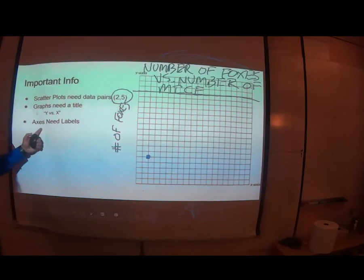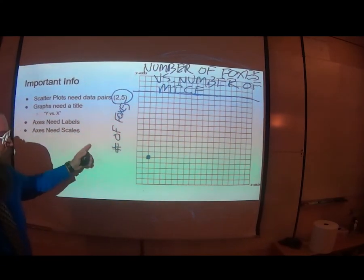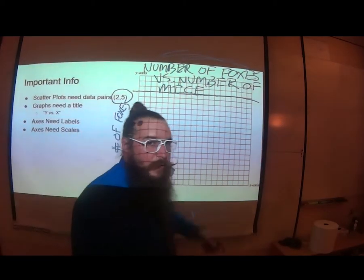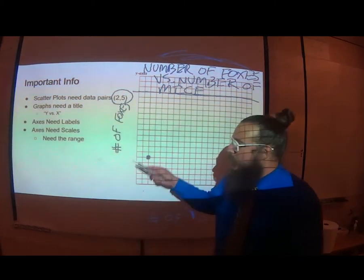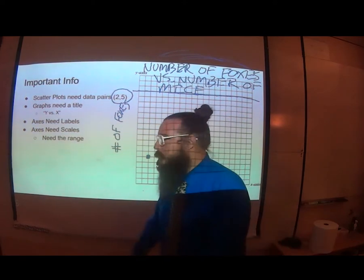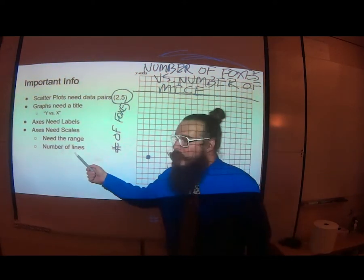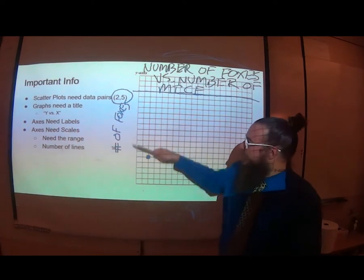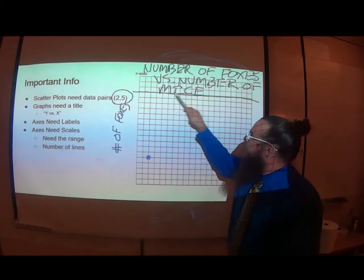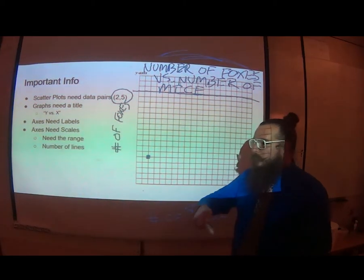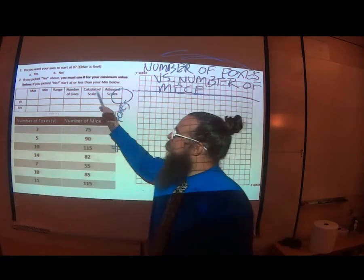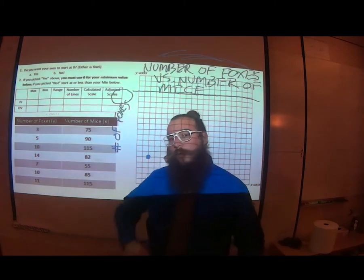In addition to having labels, your axes will also need to have scales - the numbers that you write on there that let us know how much each number is worth. That is also crucial. To do that, we need to know some more things. We need to know the range of our data - what's the biggest number, what's the smallest number? We need to know the number of lines on the graph that we're using. Remember, I'm not going to use these three lines at the top because I don't want to interfere with the title.